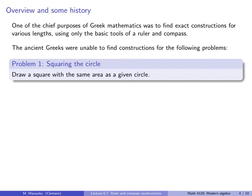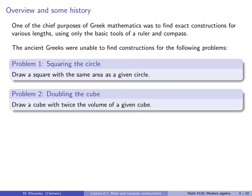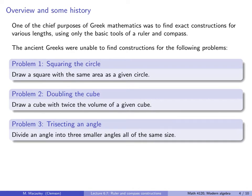Problem one: squaring the circle — draw a square with the same area as a given circle. Problem two: doubling the cube — draw a cube with twice the volume of a given cube. And problem three: trisecting an angle — divide an angle into three smaller angles all of the same size. For over 2,000 years, these problems remained unsolved.